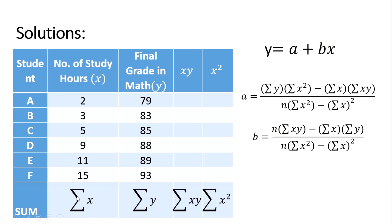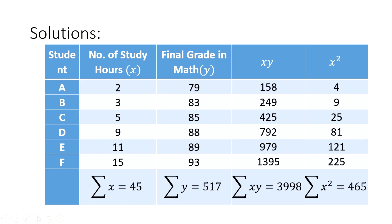For the xy column, multiply each pair: 2 times 79 is 158, 3 times 83 is 249, 5 times 85 is 425, and so on. For the x squared column: 2 squared is 4, 3 squared is 9, 5 squared is 25, and so on. At the bottom, take the sum: 2 plus 3 plus 5 plus 9 plus 11 plus 15 equals 45.